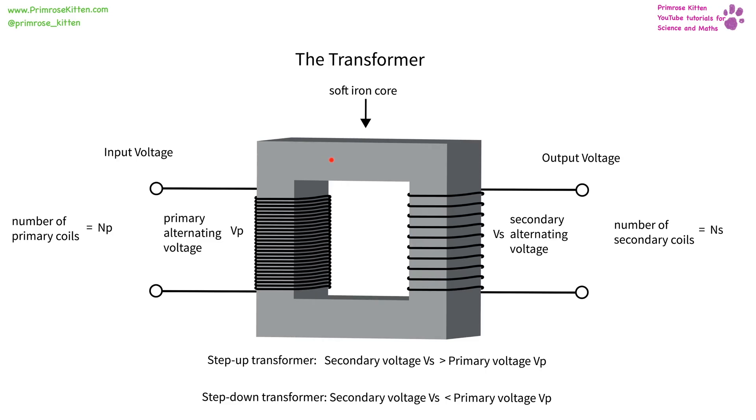In a transformer, we have a soft iron core. We have a wire which is going to be coiling around, and you'll notice there are a different number of coils here. We are going to be looking at varying the number of coils so that we can vary the voltage that goes into and comes out of our transformer.